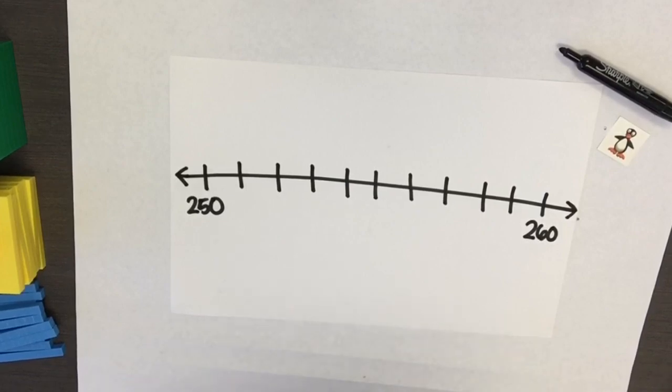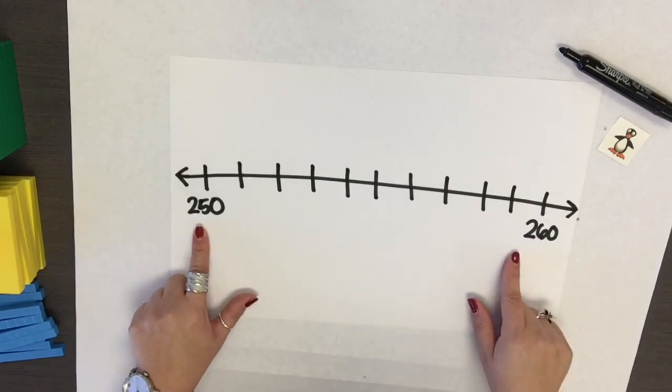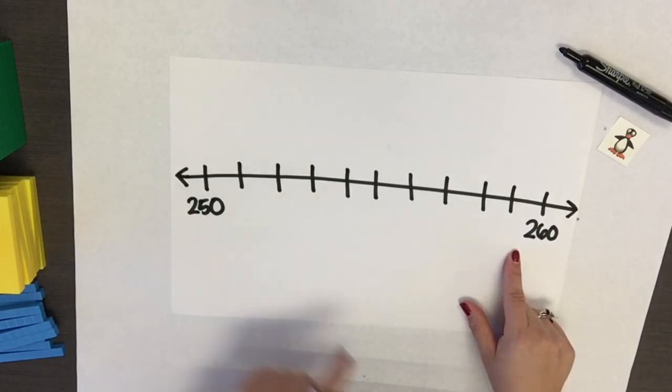After students have experienced positioning numbers on an open number line, move to a number line with benchmark numbers and tick marks. Remember when reasoning on a number line, the position of zero may or may not be placed. The value of intervals on a number line may vary, however intervals of twos, fives and tens are common as students are familiar with skip counting by these values.